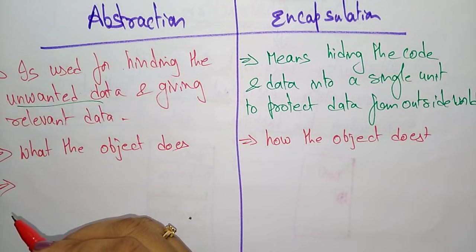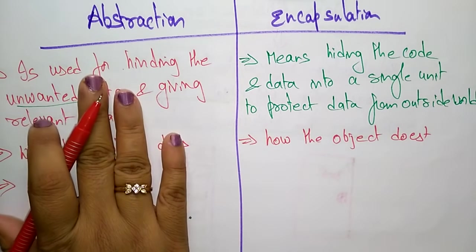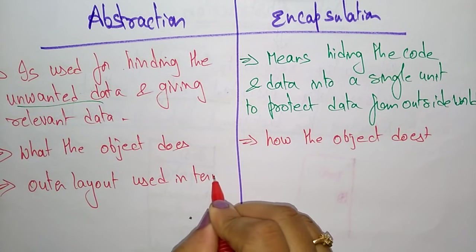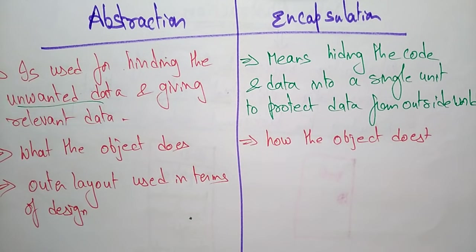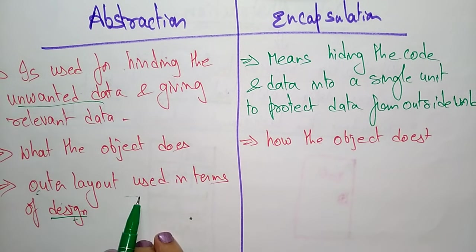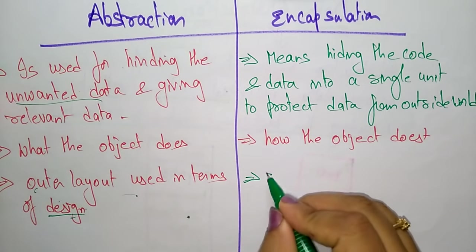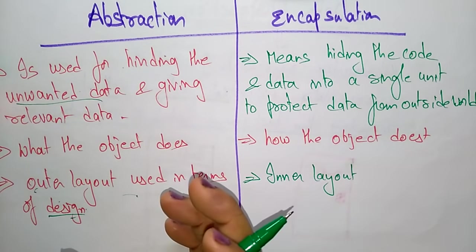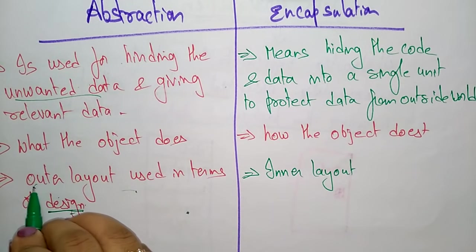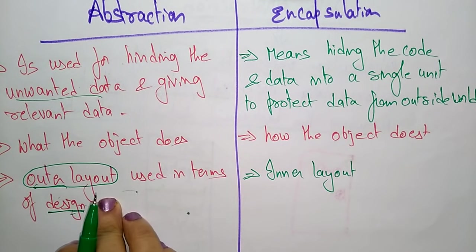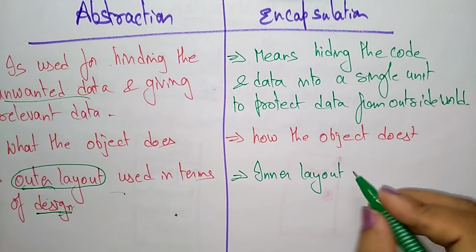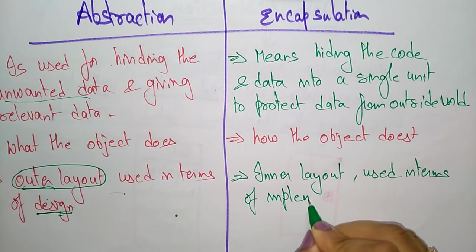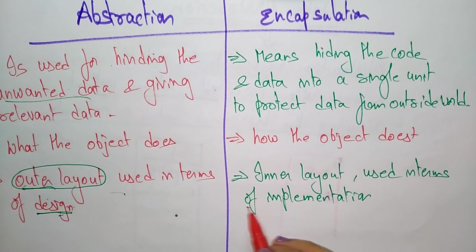Abstraction is focused on outer layout, used in terms of design. So abstraction is used whenever you are discussing about the design — outer layout means used in terms of design. Whereas encapsulation is the inner layout, used in terms of implementation. By seeing this point you will understand: abstraction is used in the concept of designing, it's just the outer layout, whereas encapsulation is the inner layout, used in terms of implementation.